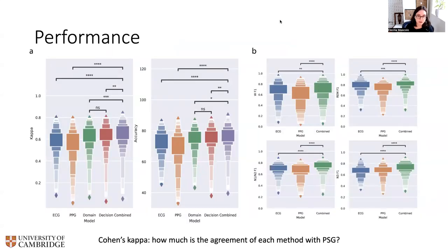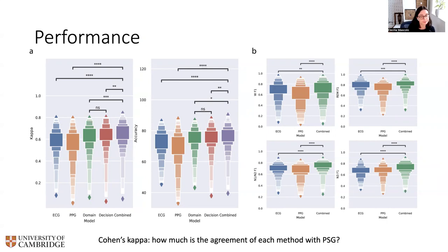They compare the performance across models — looking at the second panel, accuracy increases in general up to quite high accuracy for model eight, when both components of the model are retrained. You can also see the performance on various sleep stages separately. The Cohen's kappa — which measures how much each model is in agreement with PSG — also increases, so the fine-tuned combined model has the highest kappa.